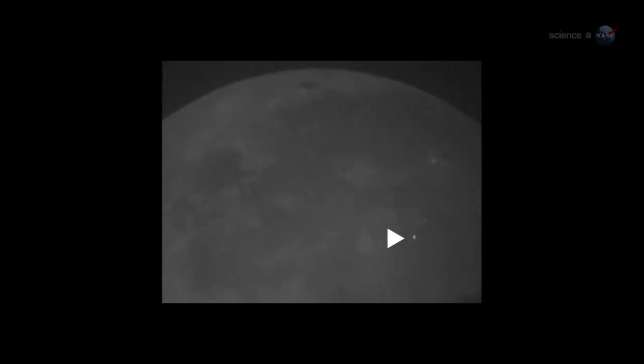Anyone looking at the Moon at the moment of impact could have seen the explosion, no telescope required. For about one second, the impact site was glowing like a fourth-magnitude star.